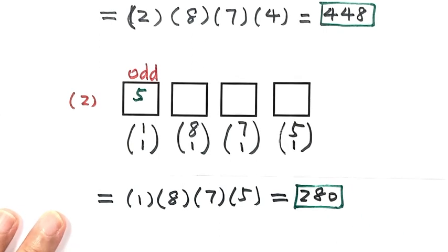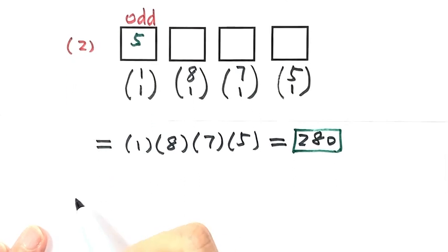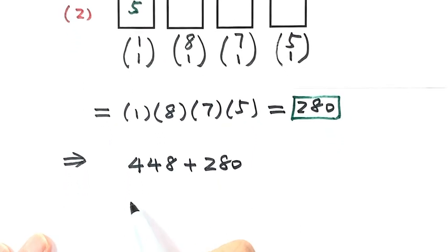Now let's combine the two cases by adding them together. We have 448 plus 280, which gives us 728. So 728 is the answer for this question. That means there are 728 even integers between 4,000 and 7,000 that have four different digits. Thanks for watching.